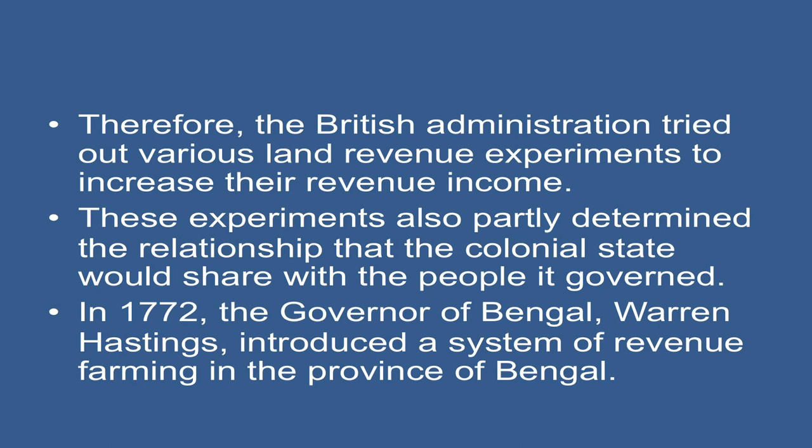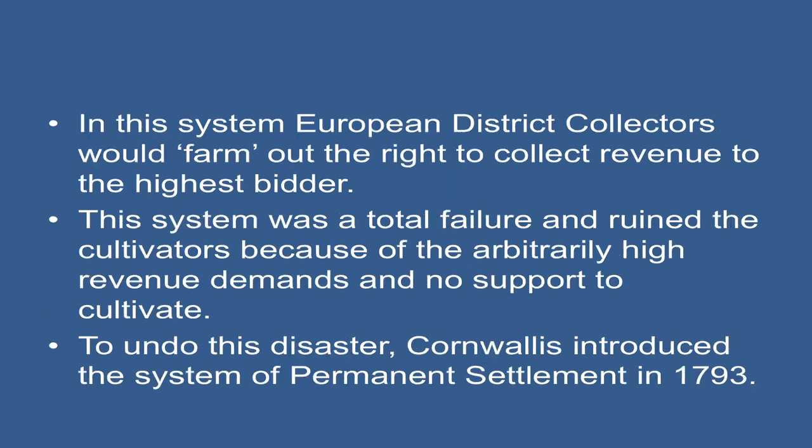In 1772, the Governor of Bengal, Warren Hastings, introduced a system of revenue farming in the province of Bengal, in which European district collectors would farm out the right to collect revenue to the highest bidder. This system was a total failure and ruined the cultivators because of the arbitrarily high revenue demands and no support to the cultivators.